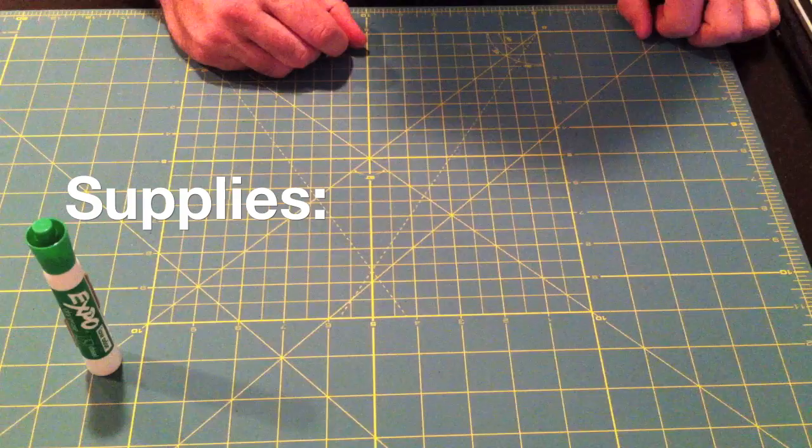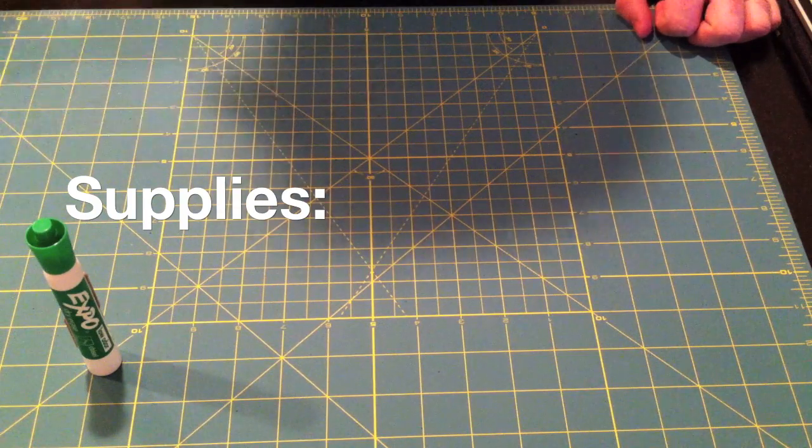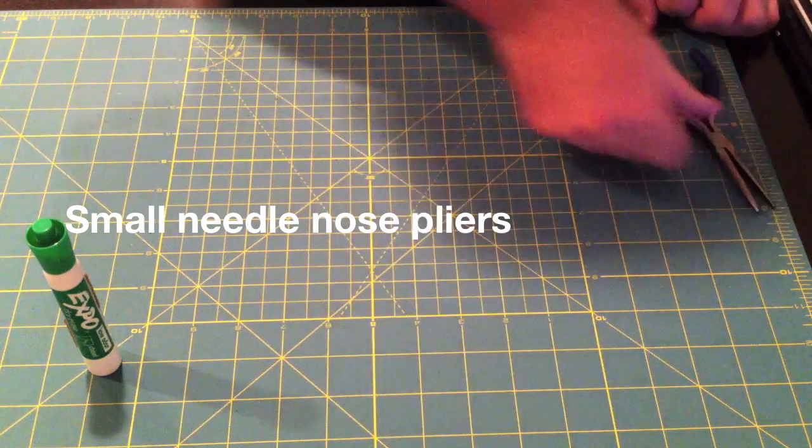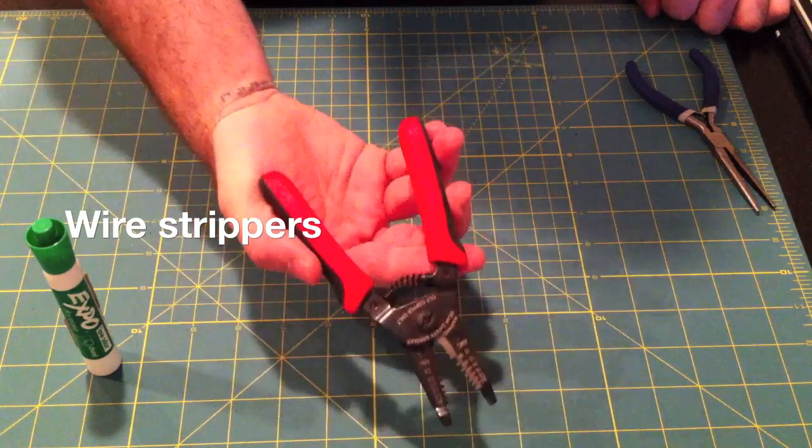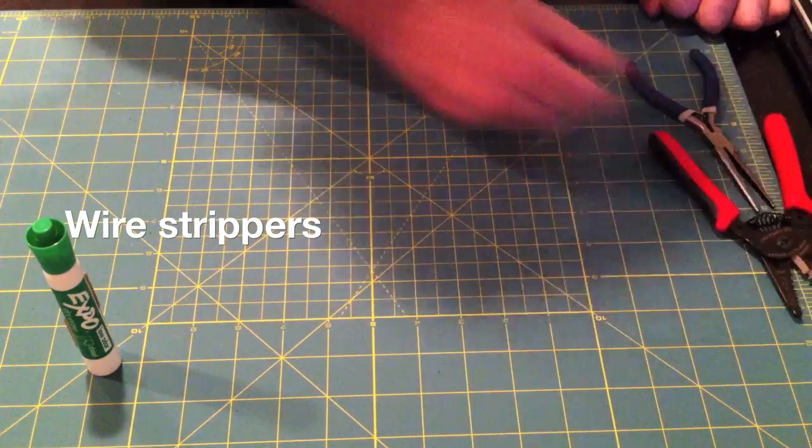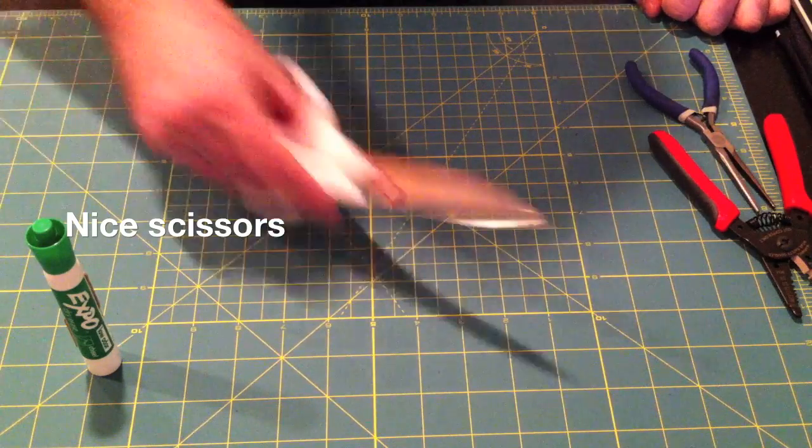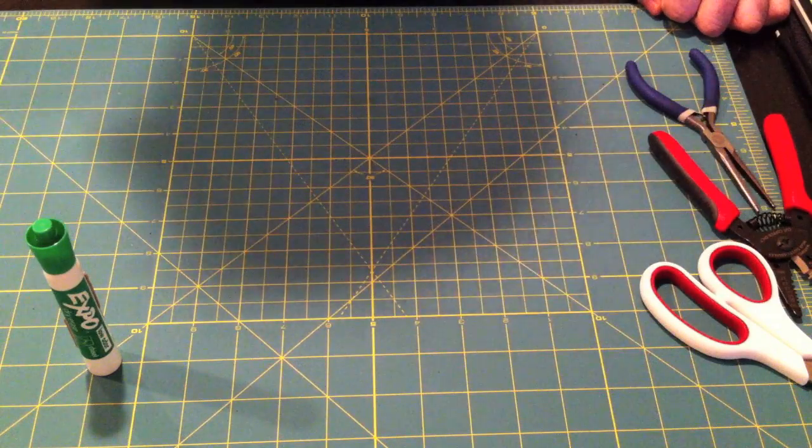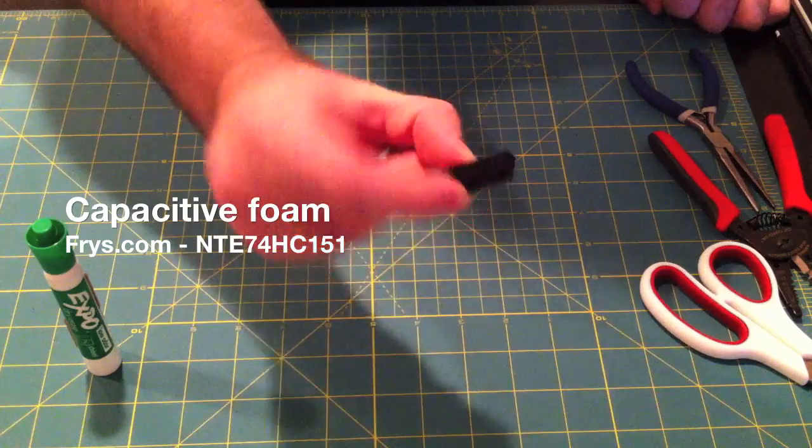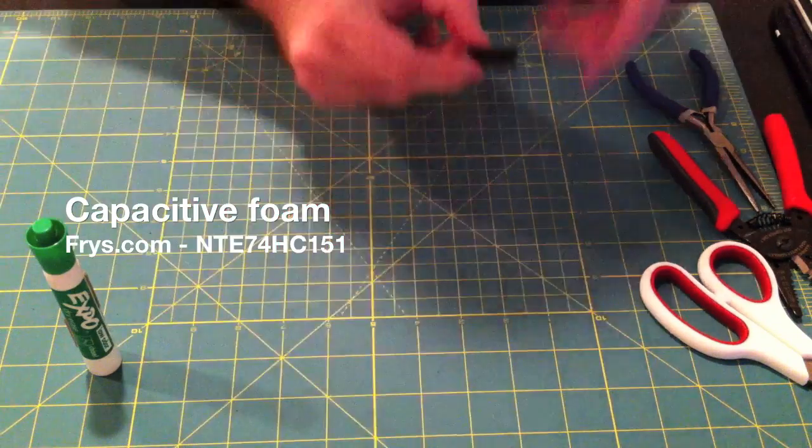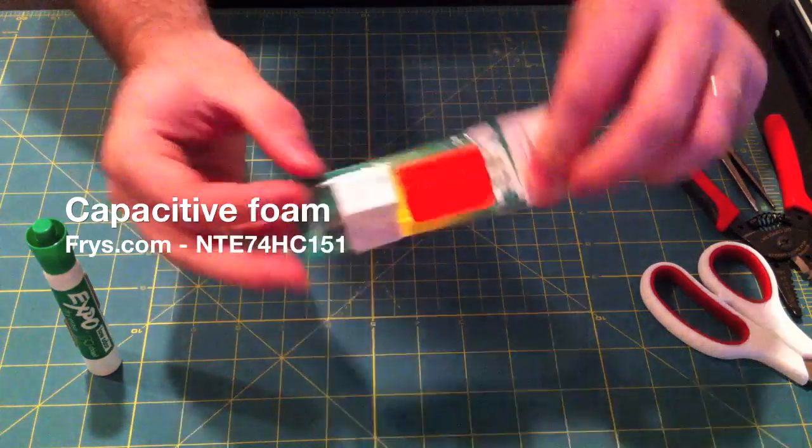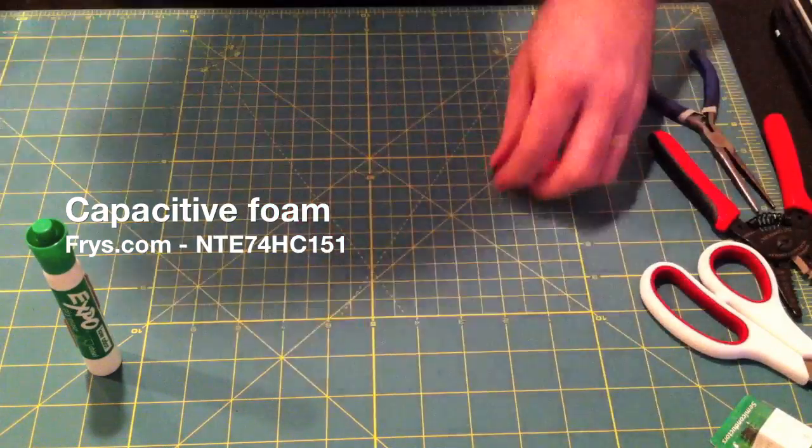Here's what we'll need to get started. First off, some simple needle nose pliers, of course we need some wire strippers, some pretty nice scissors for shaping the tip later. Some conductive foam, very specific conductive foam in this case, from Fry's, don't bother going to Radio Shack and getting what you can find there, just order this online.